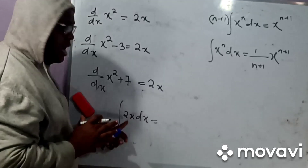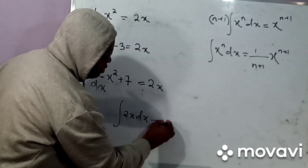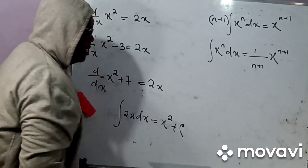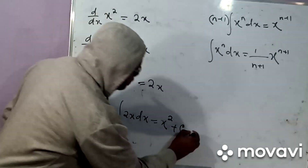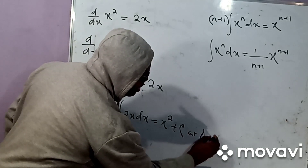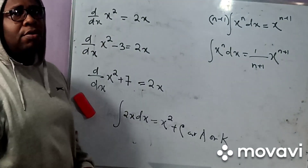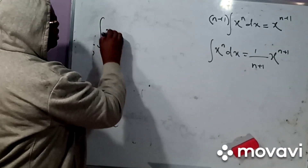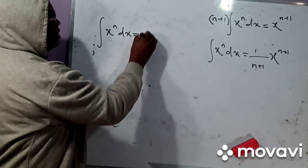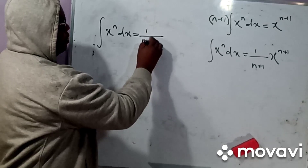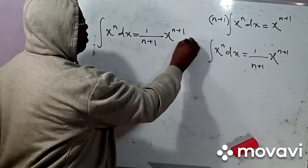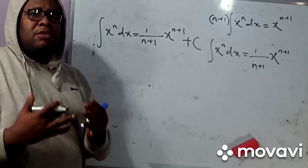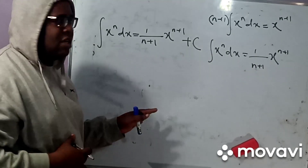So whenever you integrate any function, instead of specifying the particular constant, we simply put the letter C. Some authorities use the letter A or the letter K — any constant at all. So generally speaking, based on what we have shown, if we integrate X to the power N dx, we simply get 1 over N plus 1, then X to the power N plus 1, plus a constant of integration C. Whenever you perform an indefinite integration, there must always be a constant of integration.